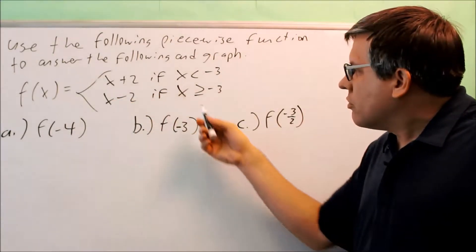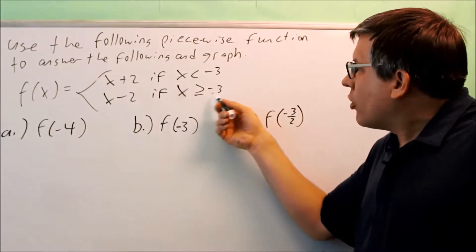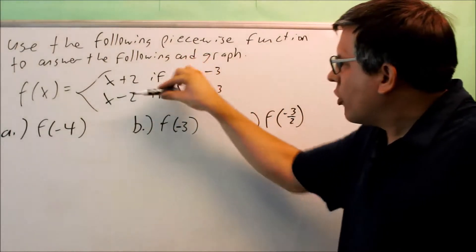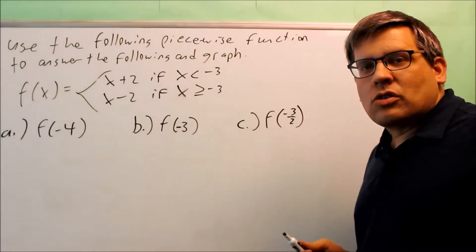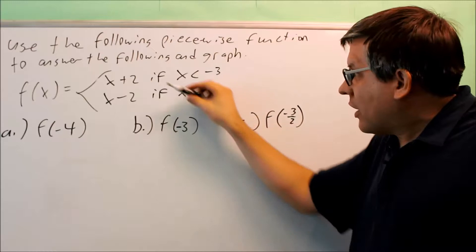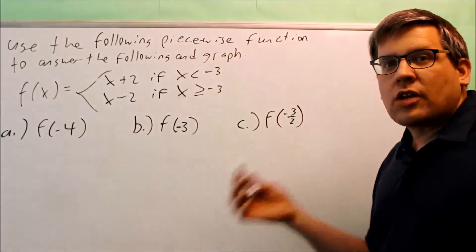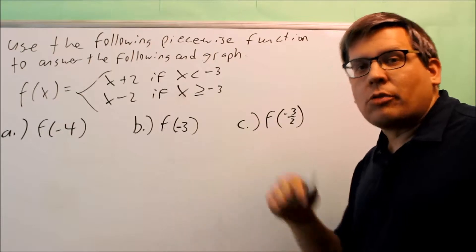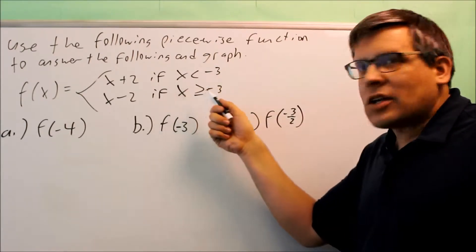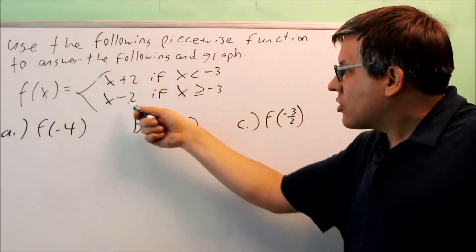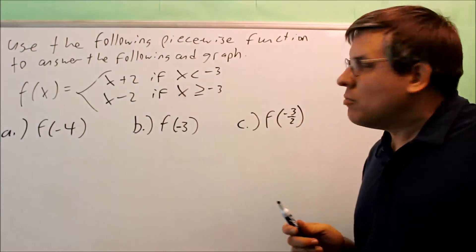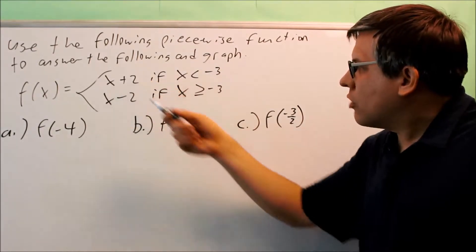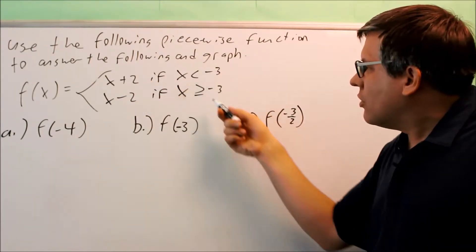Likewise, x minus 2 is only used when I'm picking values that are greater than or equal to negative 3. Therefore, I can only use one or the other of these expressions. You might be thinking, could a value belong to both? The answer is no, because this is a piecewise function. A function means that for each input there can only be one output, so for a single x value I can only get one y value.